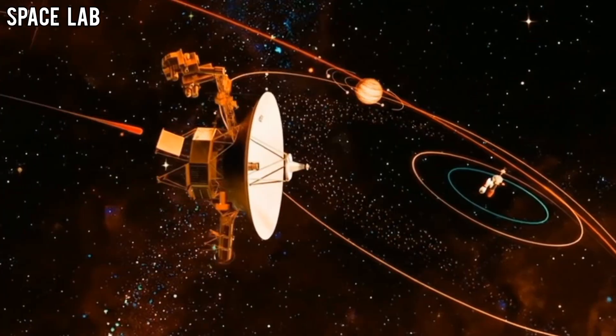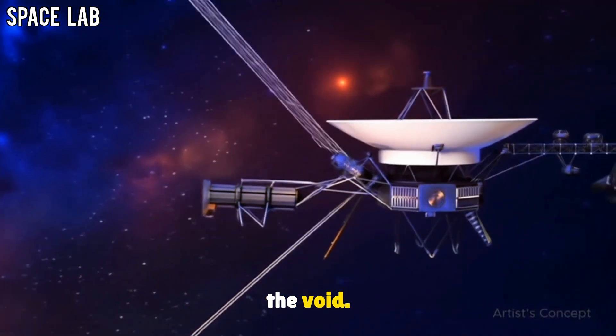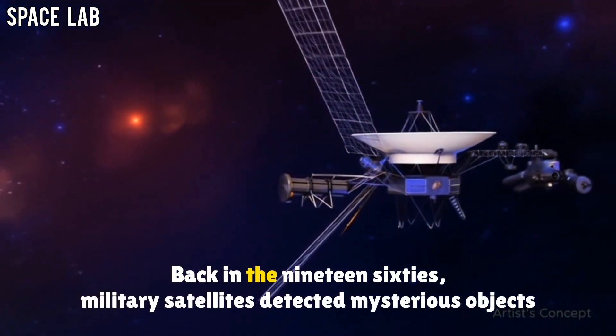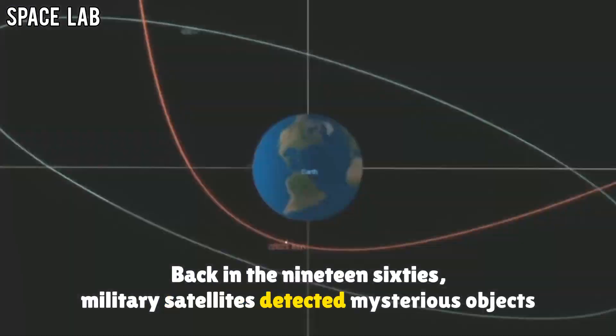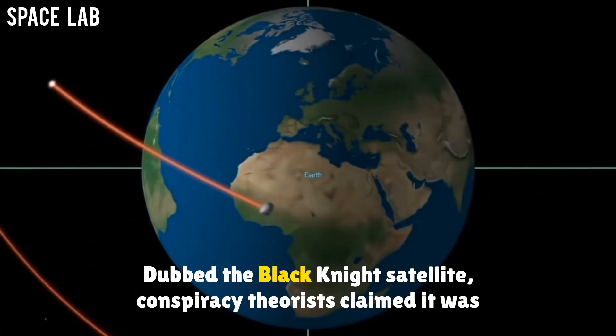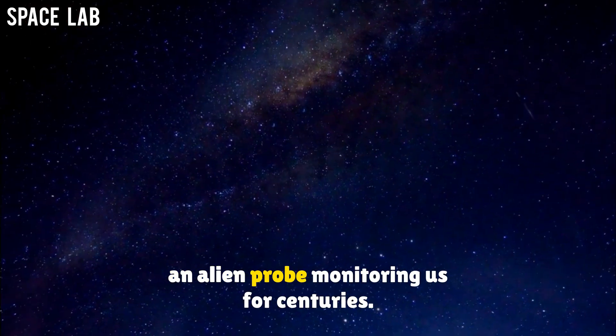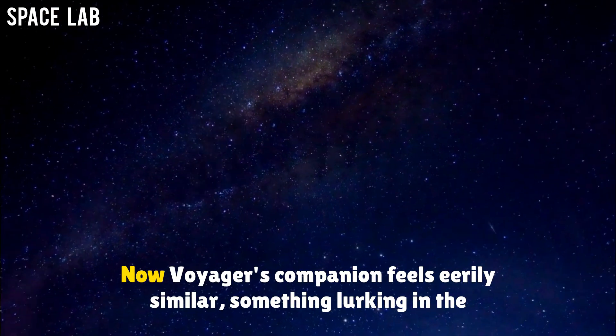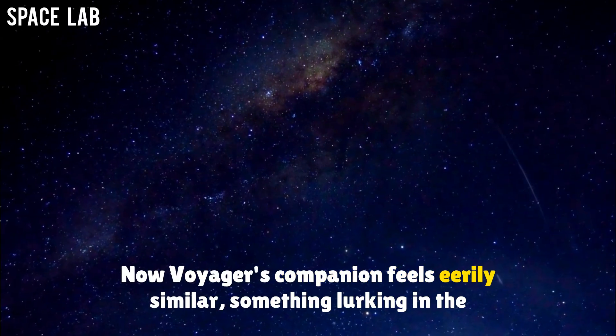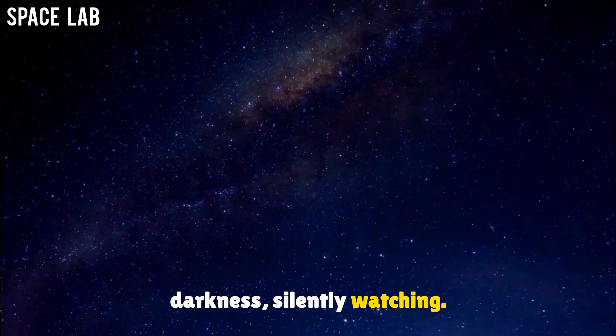But here's the twist. This isn't the first time humanity has seen companions in the void. Back in the 1960s, military satellites detected mysterious objects orbiting Earth, dubbed the Black Knight Satellite. Conspiracy theorists claimed it was an alien probe monitoring us for centuries. Now, Voyager's companion feels eerily similar. Something lurking in the darkness, silently watching.